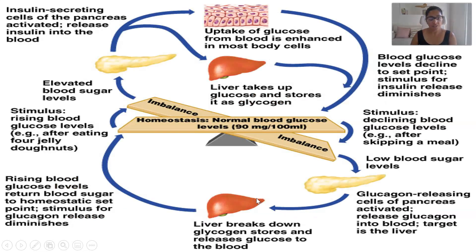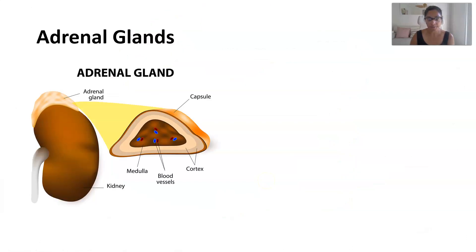This is a pictorial summary of that entire process — if you want to pause the video and look at it, this might be helpful if you're more of a visual learner. Now that we've talked about the pancreas and the two hormones it secretes to regulate blood glucose, we're going to look at the adrenal glands.